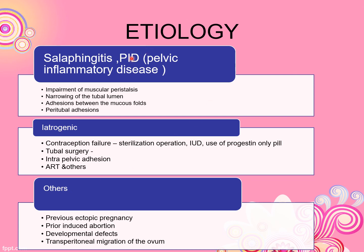What are the causes? First is salpingitis — inflammation of the fallopian tube. When there is infection or inflammation of the fallopian tube, there is a chance of ectopic pregnancy. This leads to impaired peristalsis — peristalsis is the muscular movement of the tube — which contributes to ectopic pregnancy.